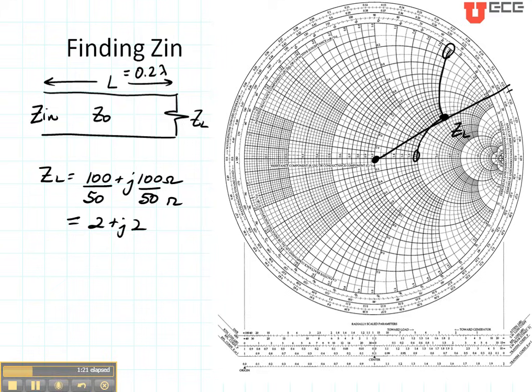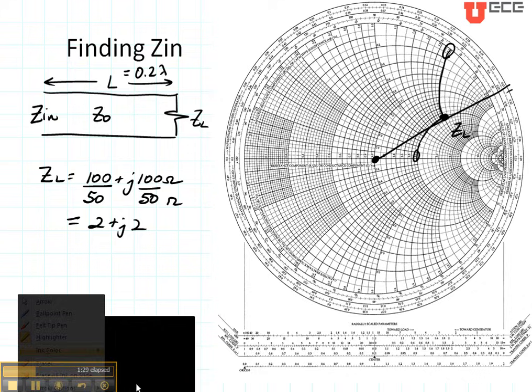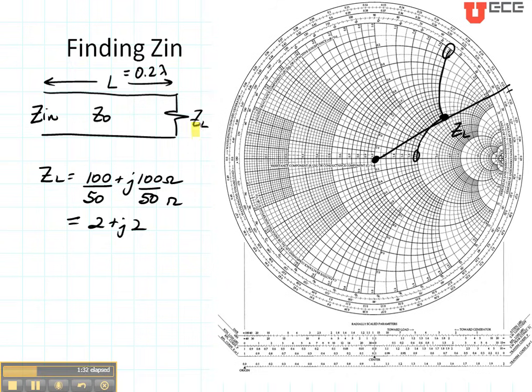The line that I'm going to be using to measure distance is going to be on the very outside of the Smith chart. If I want to go from my load in this direction to the input impedance, that is towards the generator. The generator is over here.